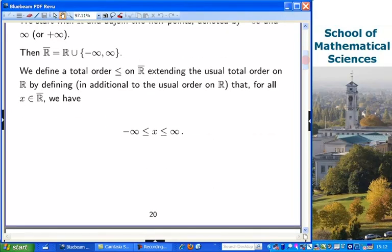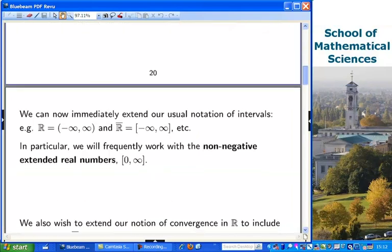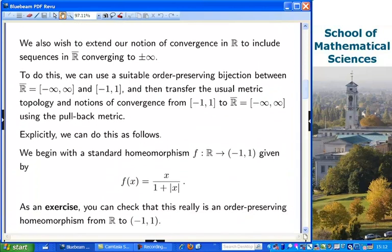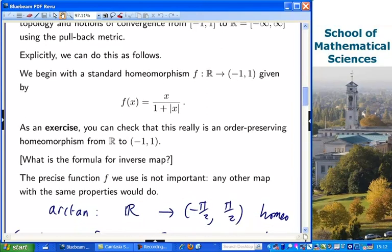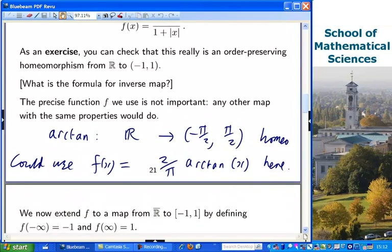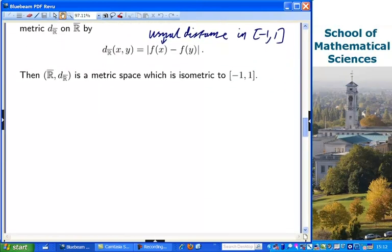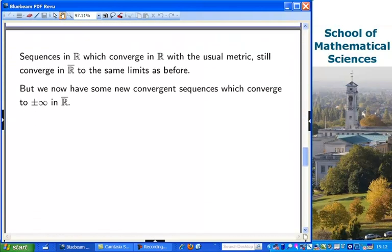And we introduced a new topology and order on that space. I explained how to have a metric on this space so that you can define notions of convergence. The idea was that we would extend the natural notion of convergence in the real line to give you some new convergent sequences which converge to plus or minus infinity. And that's where we got to last time.